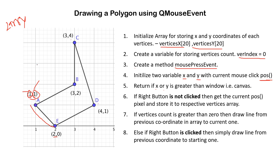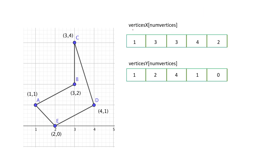If the canvas is 500x500, any click outside its bounds will not be drawn. Then we check if the right button was clicked. If yes, we connect the last coordinate stored in the array to the first coordinate to close the polygon. If right button was not clicked, we grab the position, store it in vertices_x and vertices_y, and if we have previously stored values, we draw a line from the previous coordinate to the current one.